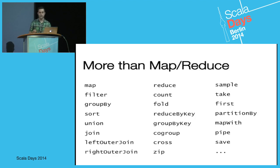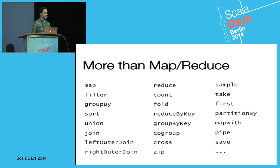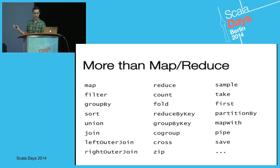This is more than just map and reduce — we actually have a pretty general API. Since you're probably Scala fans, you're probably familiar with a lot of these functions. It looks a lot like the Scala collections, but the difference is we automatically parallelize all of these functions over the cluster where your data is stored.